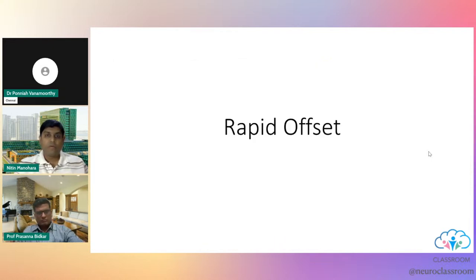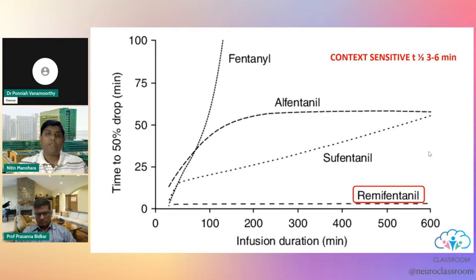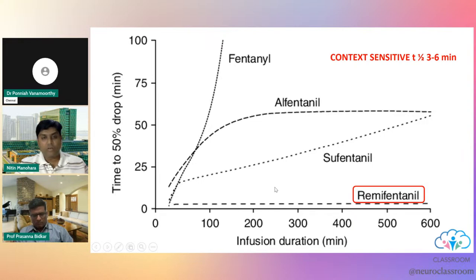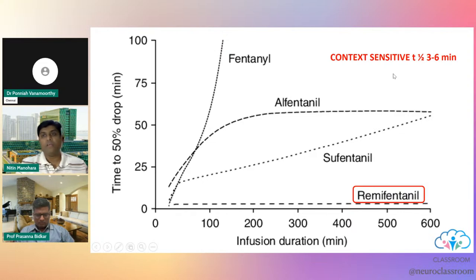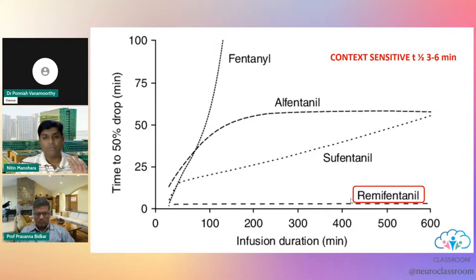Remifentanil also has a very important property: rapid offset. Comparing to all other fentanyl group drugs, regardless of how long the duration of infusion or the total dose given, the offset is very predictable and consistent. The context-sensitive half-life is about 3 to 6 minutes for remifentanil — so within 3 to 6 minutes of stopping the infusion, you will have a 50% reduction in blood concentration.